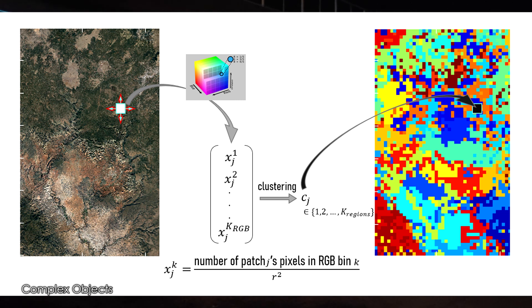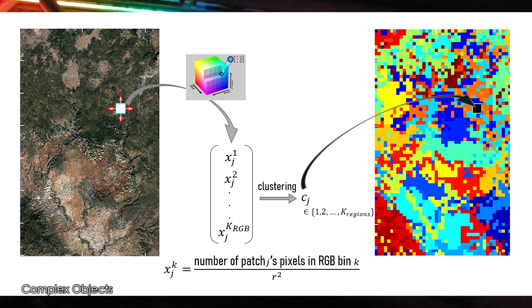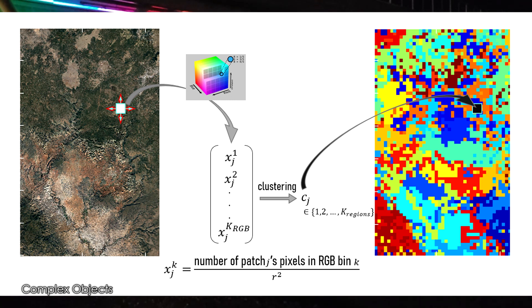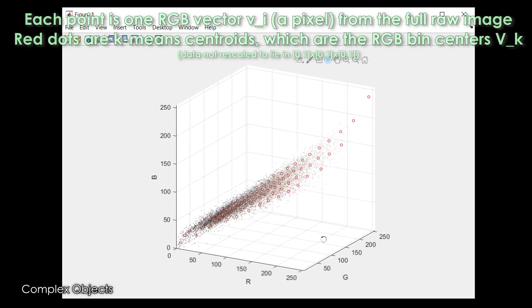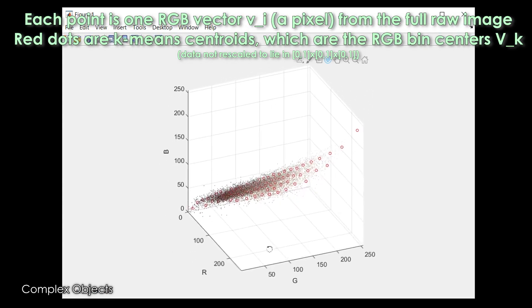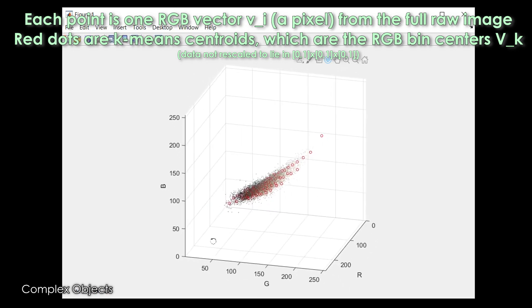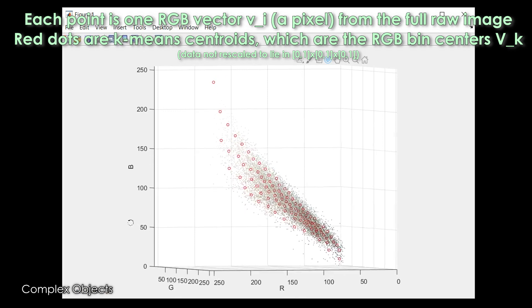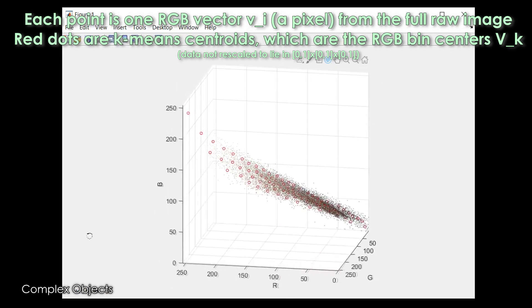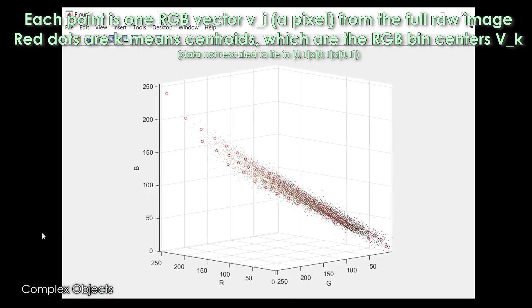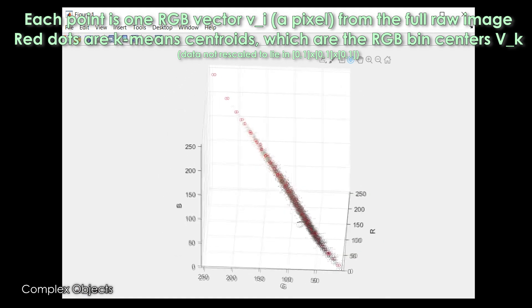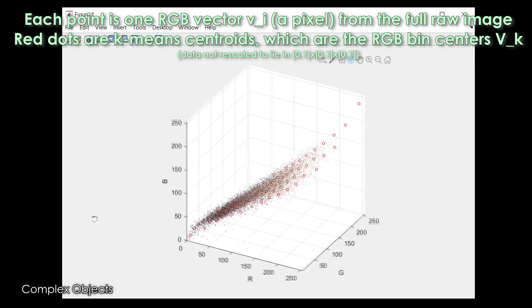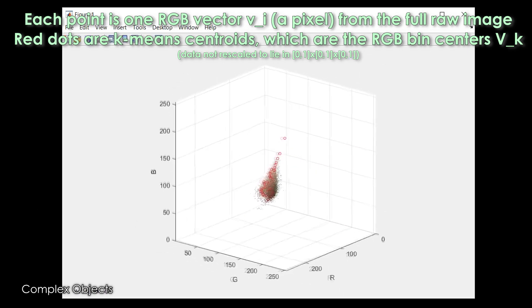The problem with that representation — taking the distribution of pixels across those cubes as the feature vector — is that you end up with a lot of cubes that have nothing in them, so it's a lot of wasted features. You can see from plotting the full original image in RGB space that there's a lot of empty space — many colors that simply don't exist in the image. So I realized a more efficient representation would be to have bins overlaid on the actual pixel color manifold.